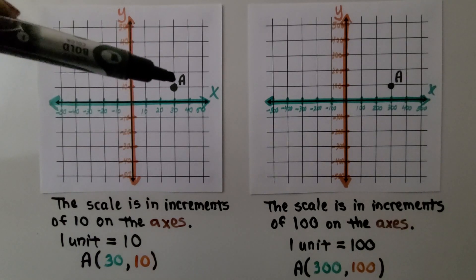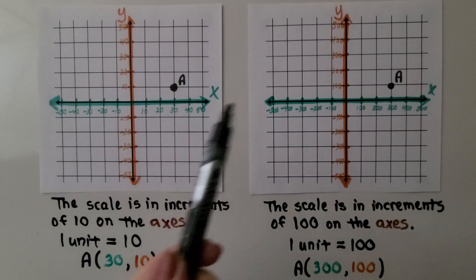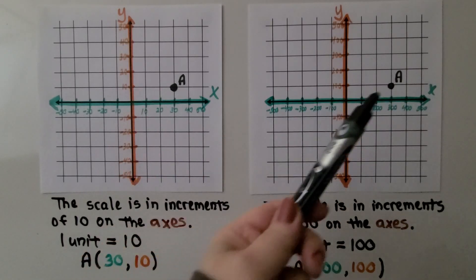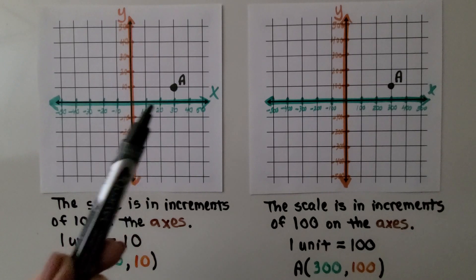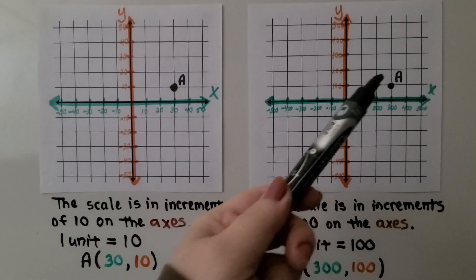So point A is at 30 for x and 10 for y. Now, it looks like they're in the same place, doesn't it? It's three units over and one unit up, three units over and one unit up.